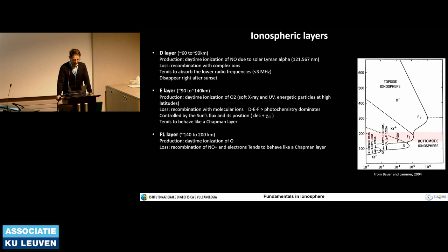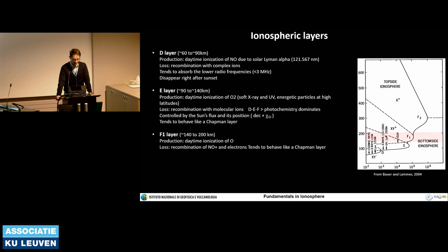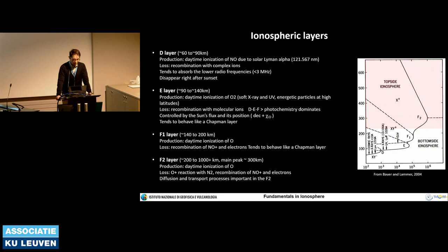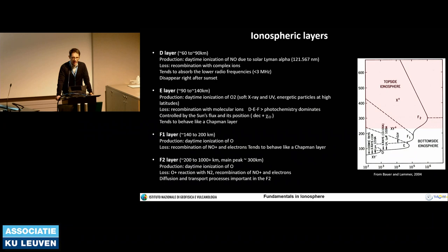The F1 layer spans roughly 140 to 200 km — these numbers are rough and change a lot. Production is the daytime ionization of oxygen and the loss is recombination of NO⁺ with electrons; it tends to behave like a Chapman layer. The F2 layer extends up to 1000 km and more with a peak typically at about 300–350 km. Daytime ionization of oxygen is the main production; loss is the O⁺ reaction with N₂ and recombination of NO⁺ with electrons. The F2 layer is also significantly affected by transport and diffusion processes, which make it deviate from ideal Chapman layer behavior.